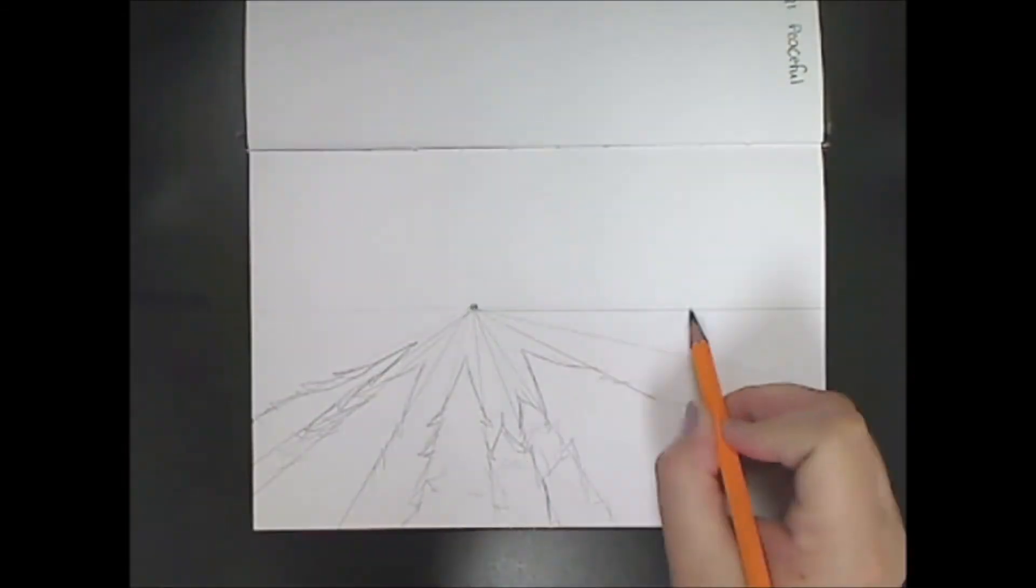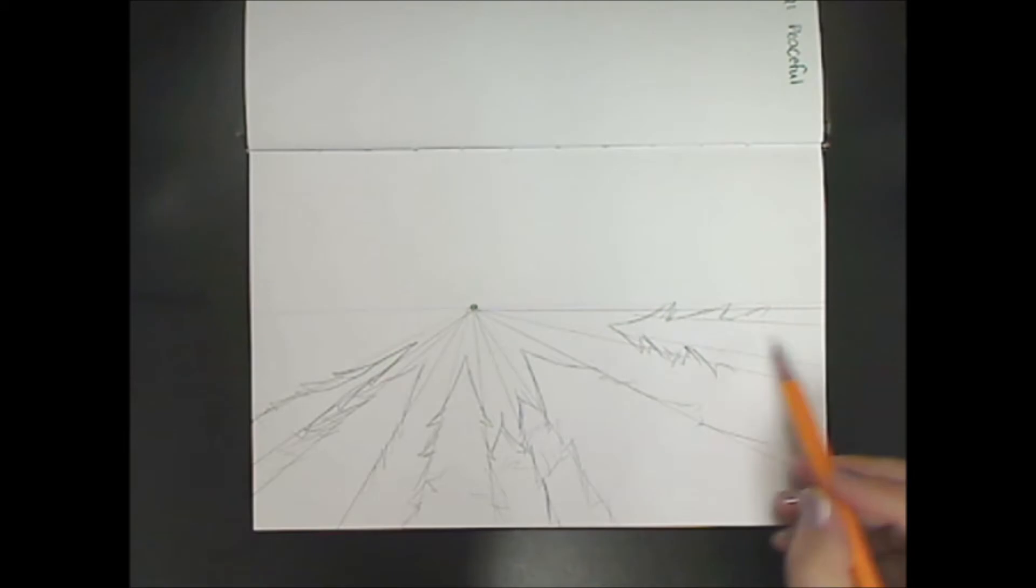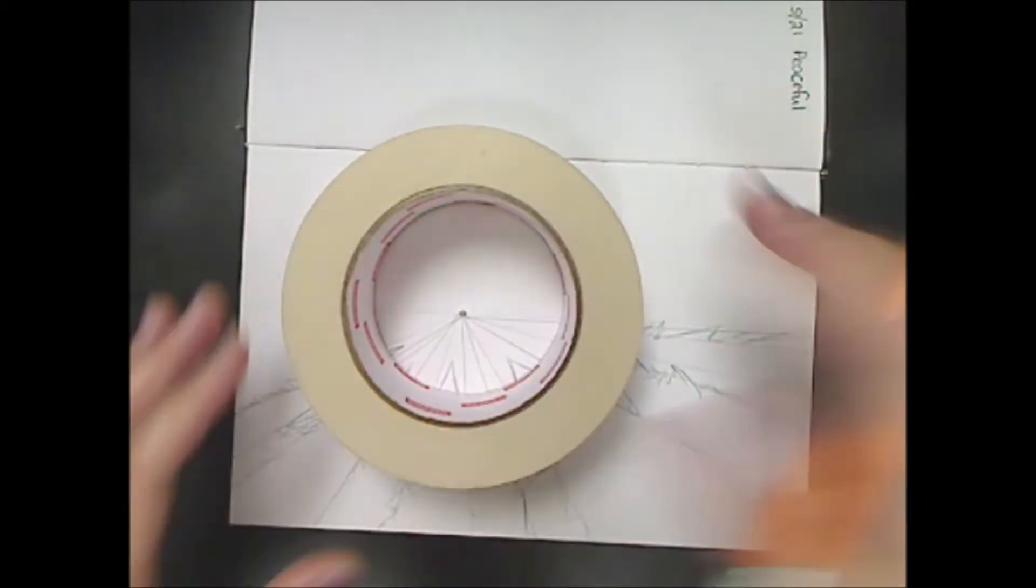That means there's going to be some smaller ones in the background. Remember, objects are smaller as they get farther away from the viewer. That goes for anything behind the trees up front.